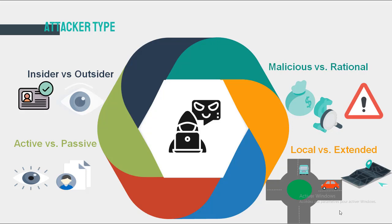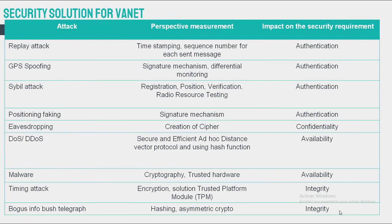Various solutions have been implemented to deal with security issues in VANET. For replay attacks, the solution is to use a timestamp to keep a cache of recently received messages, or to use a sequence number for each sent message. For GPS spoofing, we can use authentication between vehicles and implement differential monitoring to identify abnormal changes in position. For Sybil attacks, two important methods are required: registration, to associate each vehicle with a specific ID, and position verification, in which the position of the vehicle is verified simultaneously, ensuring every node represents only one ID.